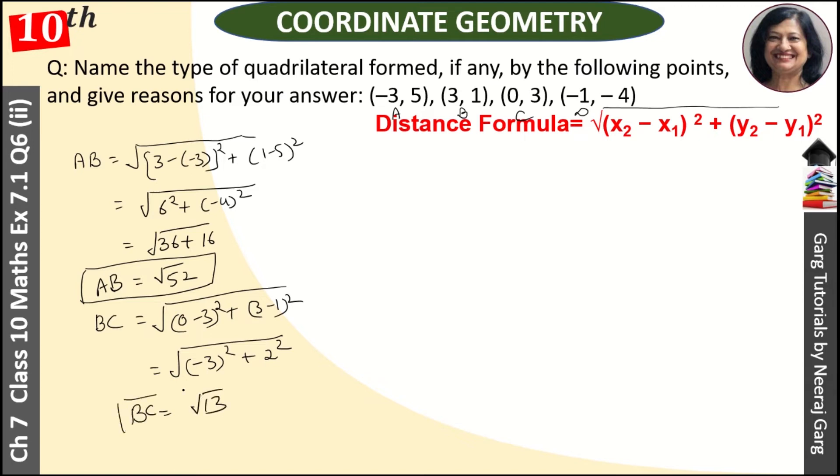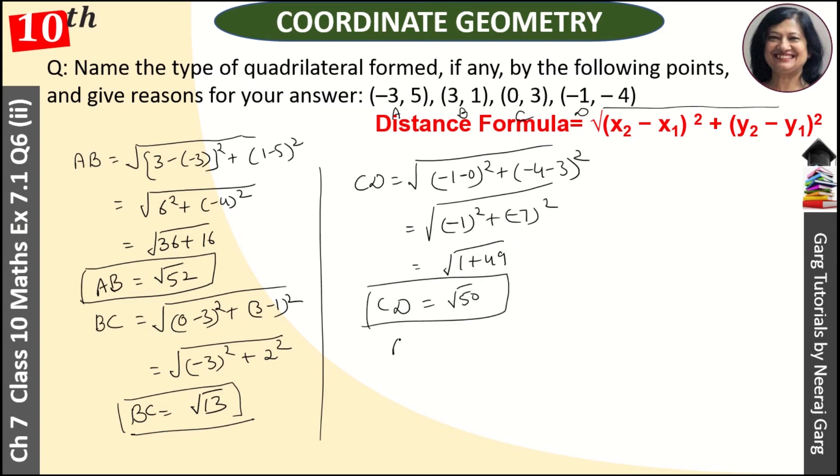This is our BC value. Now we will find CD. Then, for CD: (-1 minus 0) whole square plus (-4 minus 3) whole square. That is equal to (-1) whole square plus (-7) whole square.